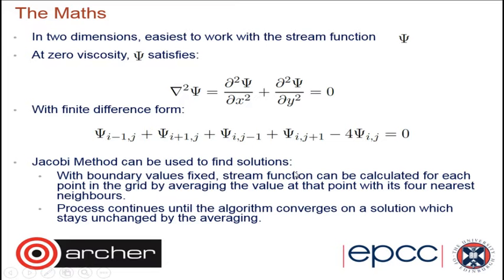When viscosity is zero, the stream function satisfies a certain equation. When you discretize that using a finite difference scheme, you get a relationship between the values of the stream function at different points on the grid, where i and j refer to x and y in the two-dimensional grid. Rearranging for psi_ij, it's a simple combination of the values of neighboring points: i minus 1 and i plus 1 at the same j, and similarly for the rows.